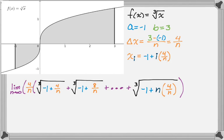And then I know that the definite integral this represents is the integral from negative 1 to 3 of the cube root of x dx.